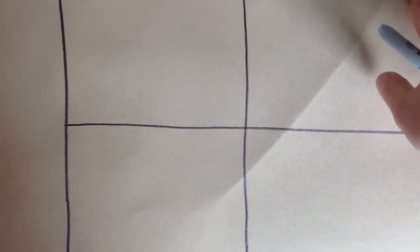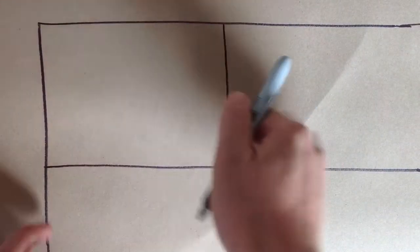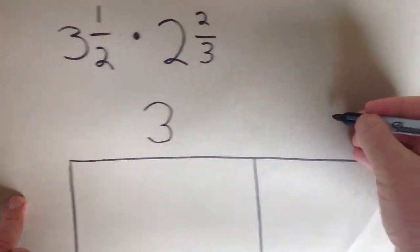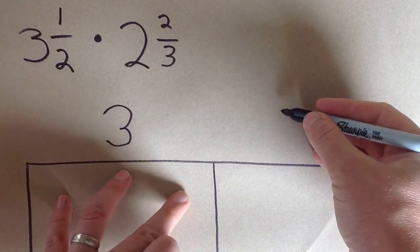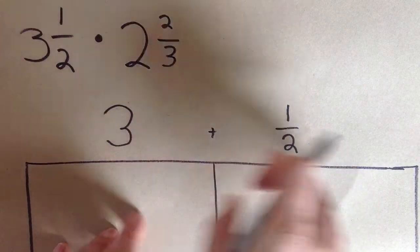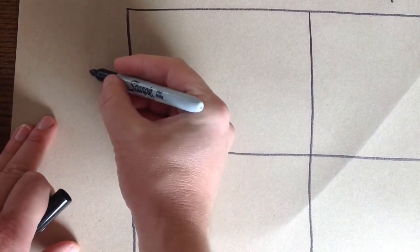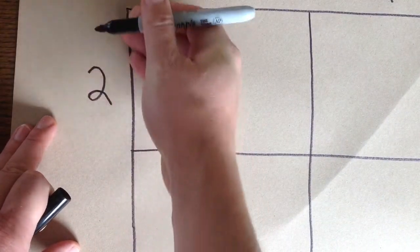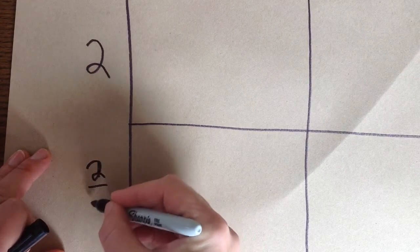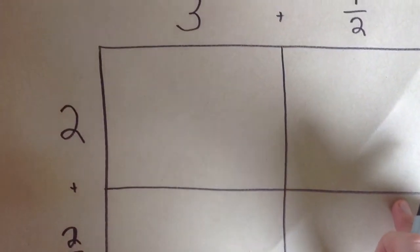So I'll first start with having a generic rectangle here. With this generic rectangle, I'm going to put my 3½ at the top. 3 will represent this length here, and ½ will represent this length here. I'll put an addition sign so you know this whole length is 3½. Over here, this length will represent 2, and this length will represent ⅔, because it's 2⅔. So I'll put an addition sign there to say it's 2⅔ combined.